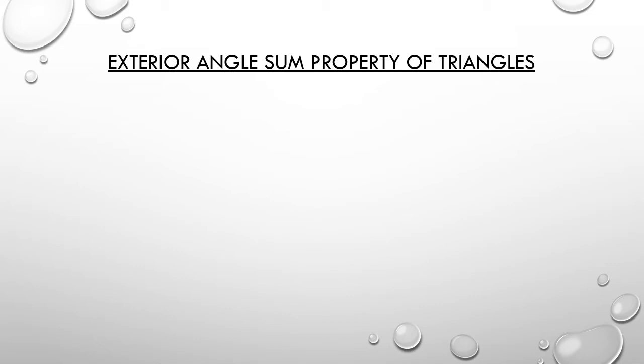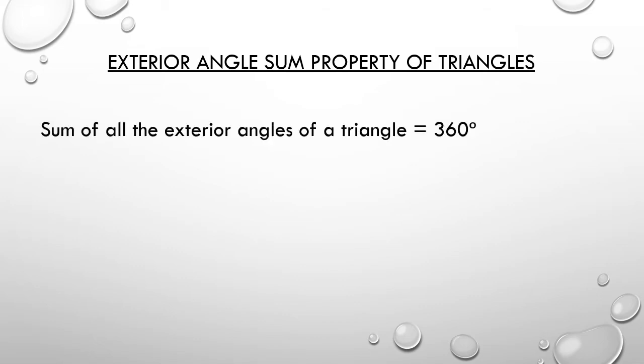Now let us learn the second property of triangles: the exterior angle sum property. The sum of all the exterior angles of a triangle is equal to 360 degrees. Let us check it out — first draw a triangle and extend all its sides like this.